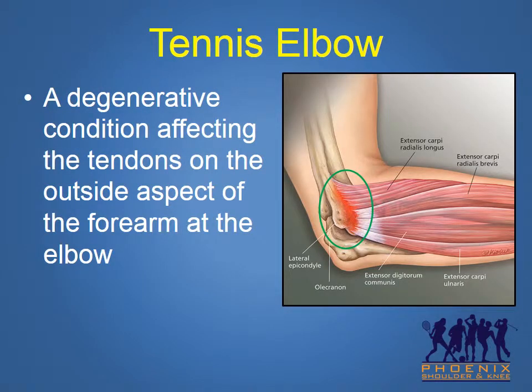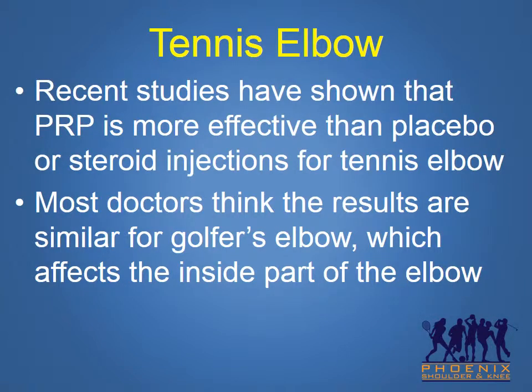Tennis elbow is a degenerative condition affecting the tendons on the outside aspect of the forearm at the elbow joint. Although steroid injections are a common form of treatment for tennis elbow, recent studies have shown that PRP is more effective than placebo or steroid injections for treating tennis elbow. Most doctors think that the results are similar for golfer's elbow, which affects the inside part of the elbow joint.